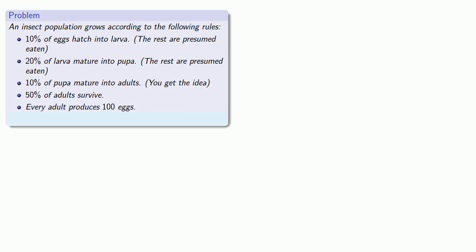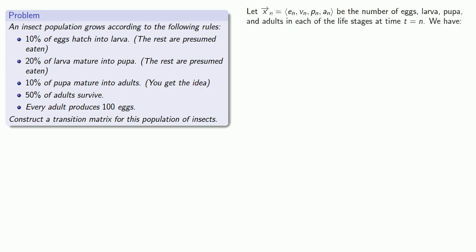Let's construct a transition matrix for this population of insects. In order to do that, we'll want to set up a vector that represents our population. Since we have four life stages, the components of our vector will be the number of individuals in those four life stages. So my vector gives me the number of eggs, larvae, pupae, and adults at some time n.